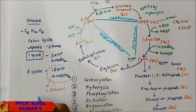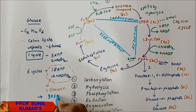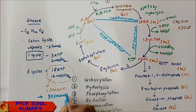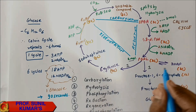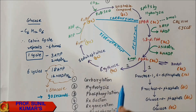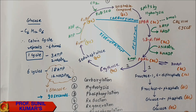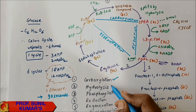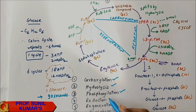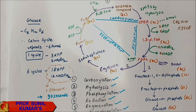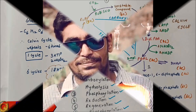For the formation of one glucose, the time required is 90 seconds — meaning one Calvin cycle corresponds to 15 seconds. To summarize the steps: carboxylation, hydrolysis, phosphorylation, reduction, regeneration, and again phosphorylation. That covers the entire Calvin Cycle.